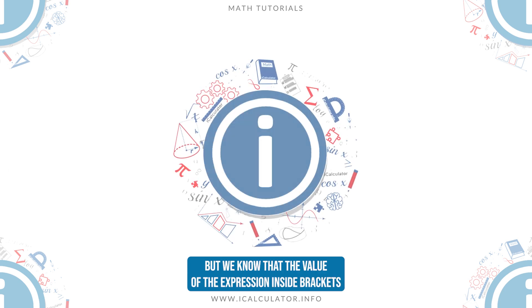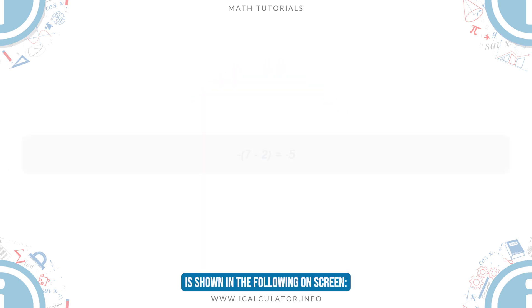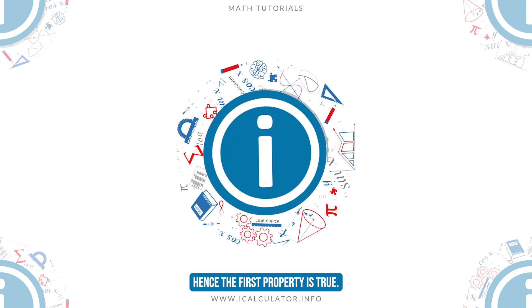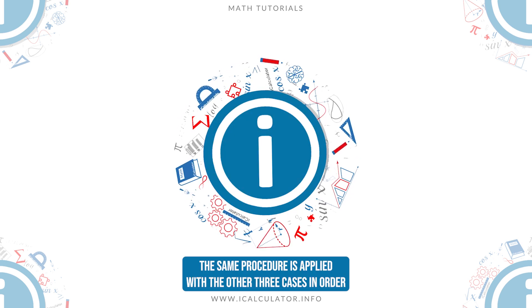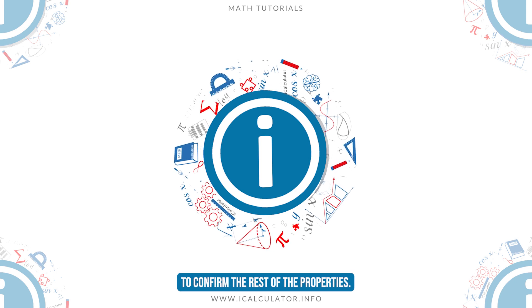But we know that the value of the expression inside brackets is shown on screen. Hence, the first property is true. The same procedure is applied with the other three cases in order to confirm the rest of the properties.